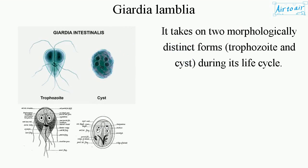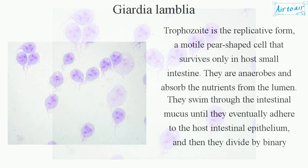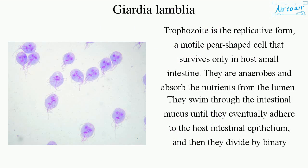Giardia takes on two morphologically distinct forms — trophozoite and cyst — during its life cycle. The trophozoite is the replicative form: a motile, pear-shaped cell that survives only in the host small intestine.